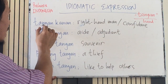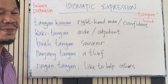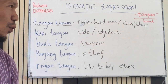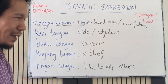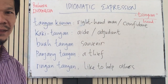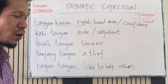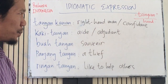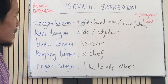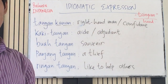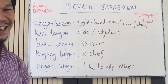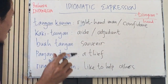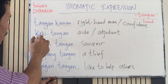The first expression is 'tangan kanan,' which means 'right-hand man' or 'confidant' in English. Tangan kanan refers to a person — such as someone working for a boss or manager — who replaces or acts on someone's behalf.